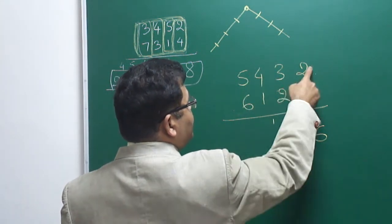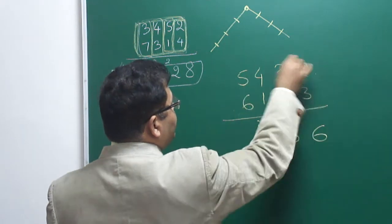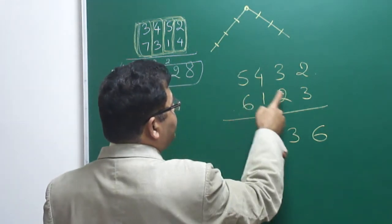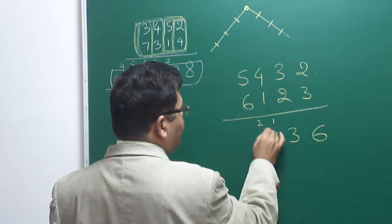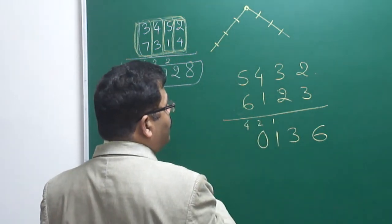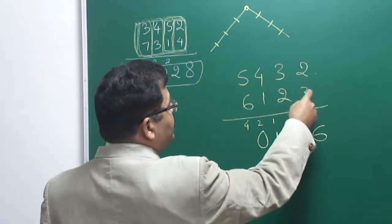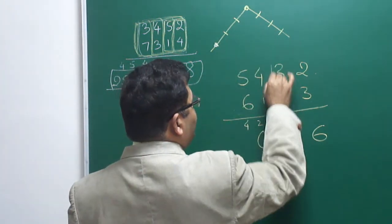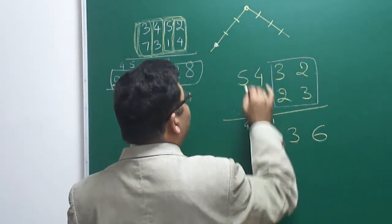Now taking all 3 together. 4, 3, that's 12 plus 2, 14 plus 6, 20 and 1, 21. So write 2 here. Now all 4 taken together. 5, 3, that's 15 plus 12, 27 plus 8 is 35 plus 3, 38. 38 and 2 carry on make it 40. So write 0 here and carry 4.